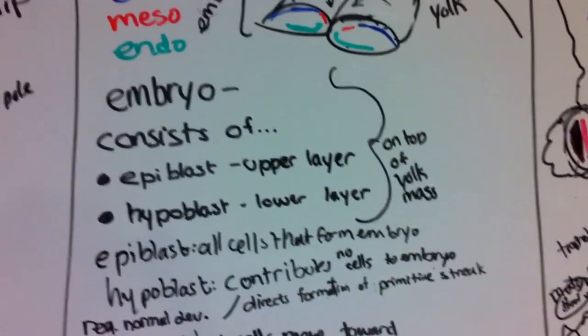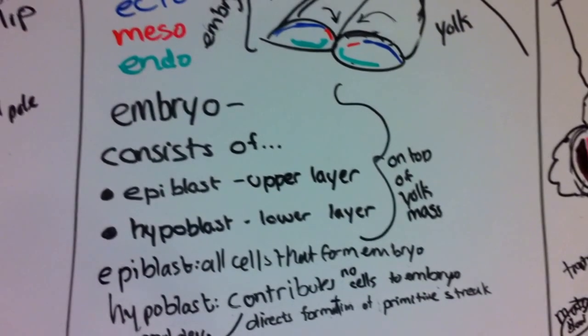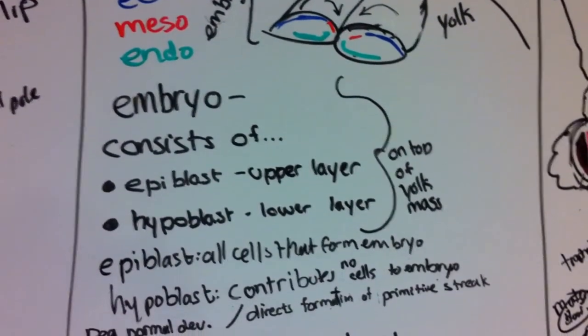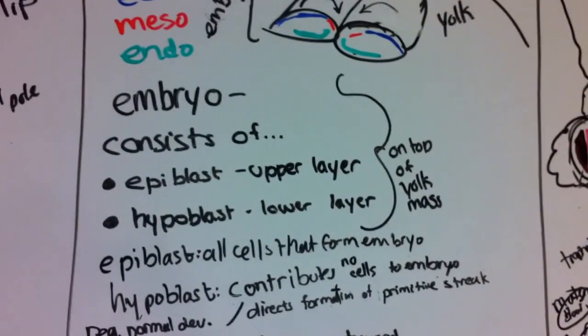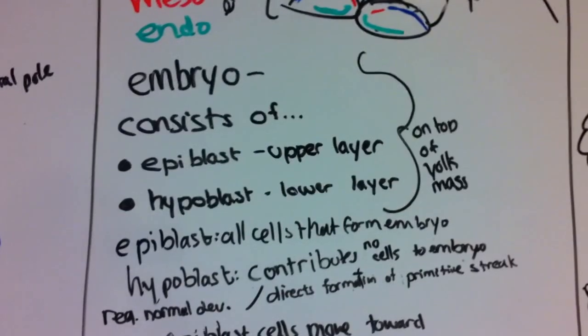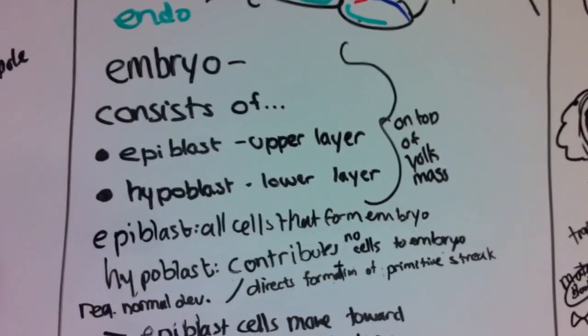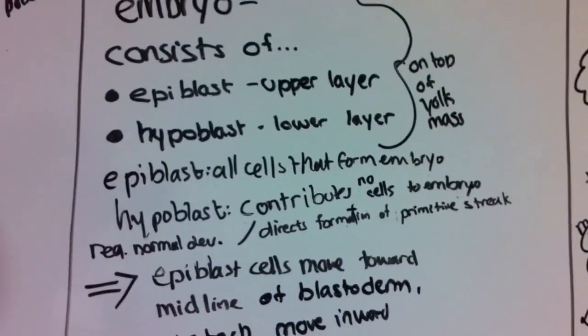The epiblast will have all of its cells that will eventually form the embryo, and its hypoblast contributes no cells to the embryo. What the hypoblast does is it helps with the normal development of the embryo and directs the formation of the primitive streak.